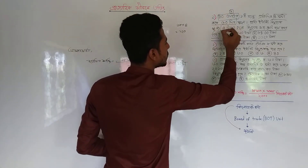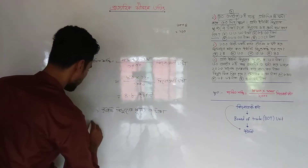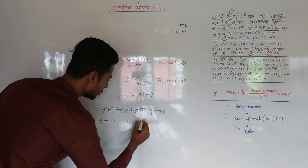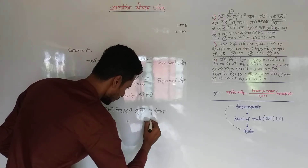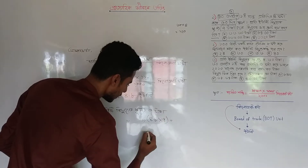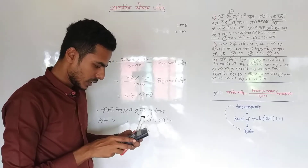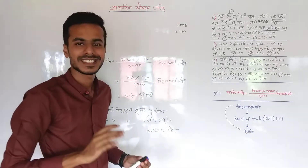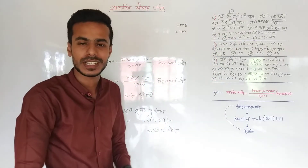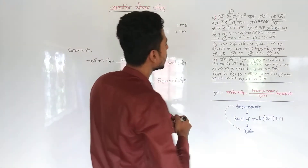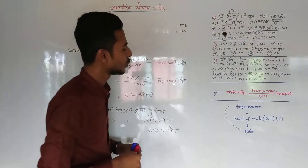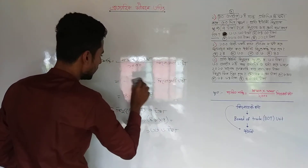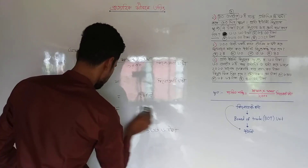The electricity bill came to a certain amount in taka. It shows 4.8 units. So 4.8 units of electricity at 7 taka per unit. We calculate: 4.8 units times 7 taka. The answer comes to 33.6 taka. That is our electricity bill amount.